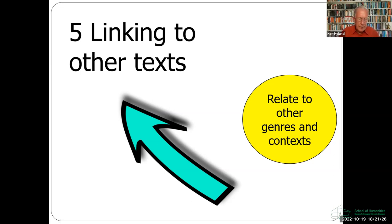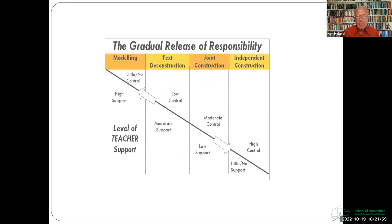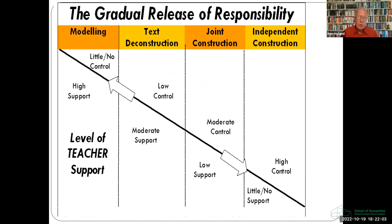Students can enter the cycle at any stage, depending on what they already know about the genre, and genres can be recycled at more advanced levels of expression. The cycle also provides students with scaffolded learning, supporting them through what Vygotsky calls the zone of proximal development — the gap between students' current and potential performance. As we move around the circle, direct teacher instruction is reduced, and students gradually get more confidence to learn the genre on their own. Their autonomy increases as they gain greater control over the genre.